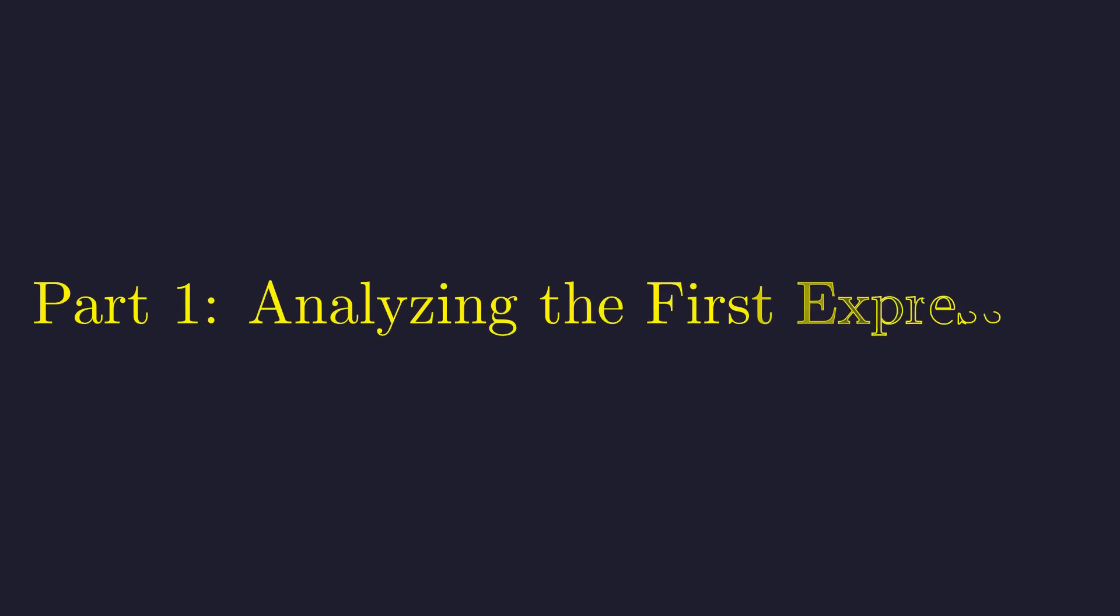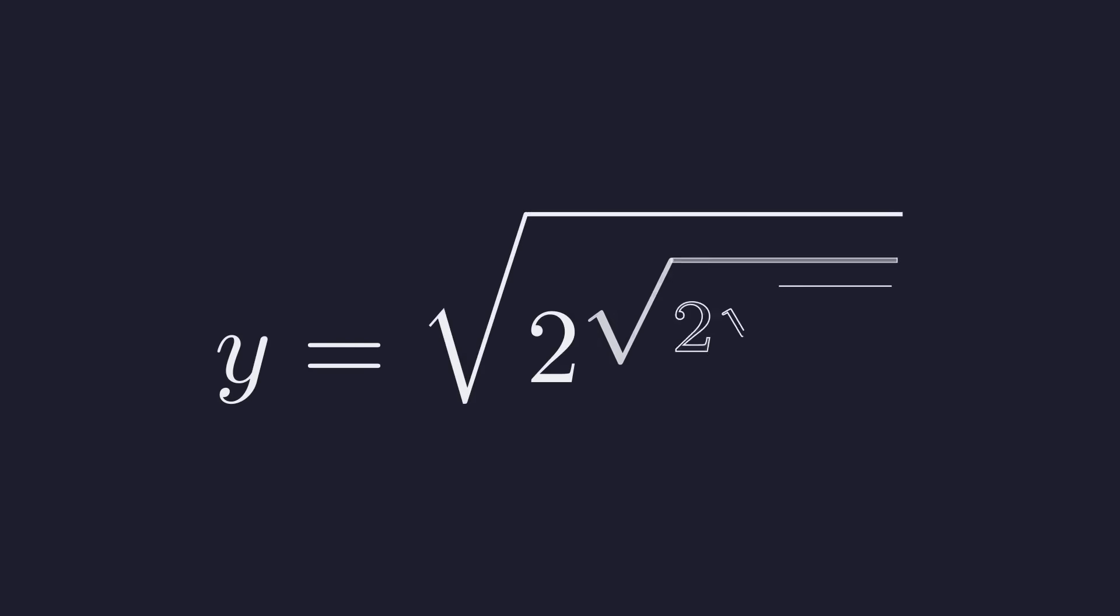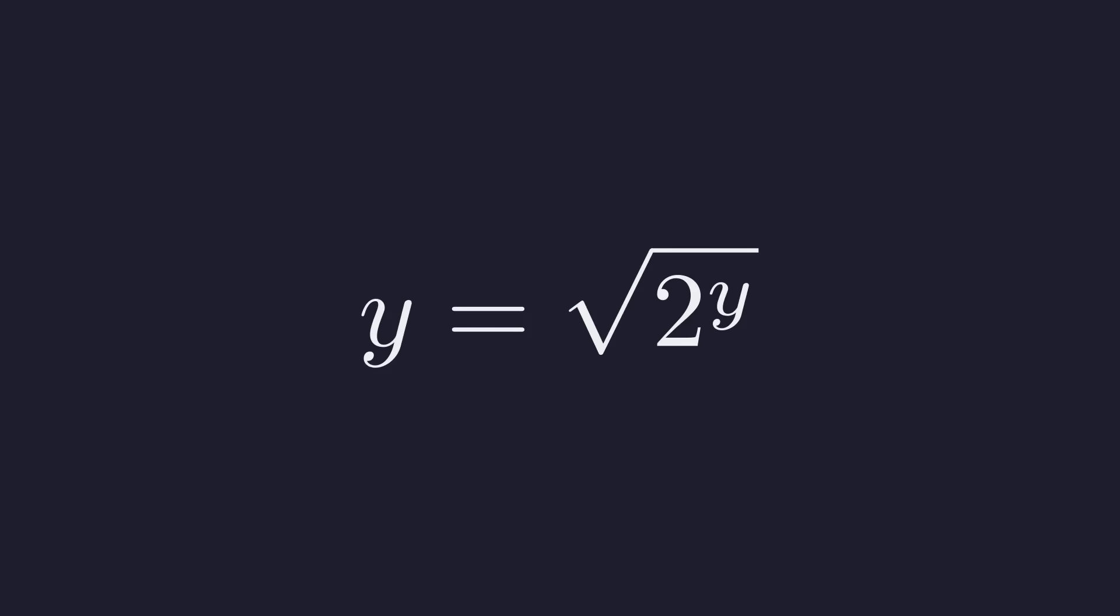Let us begin with the expression that supposedly makes sense. First, we assign the value of this entire infinite expression to a variable. Let's call it y. The key to handling these infinite objects is to find a self-similarity. Notice that the expression in the exponent is identical to the original expression. Therefore, we can substitute y back into the equation, collapsing the infinite tower into a finite one.